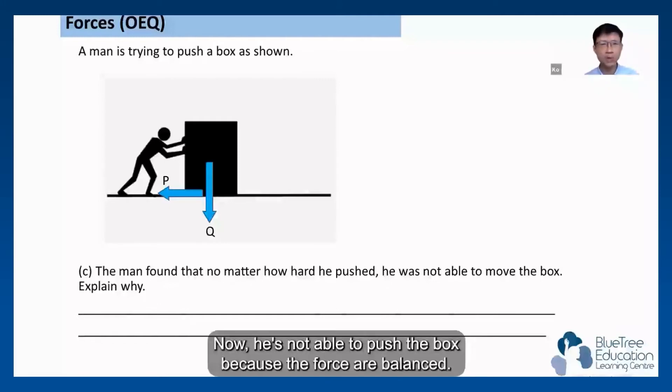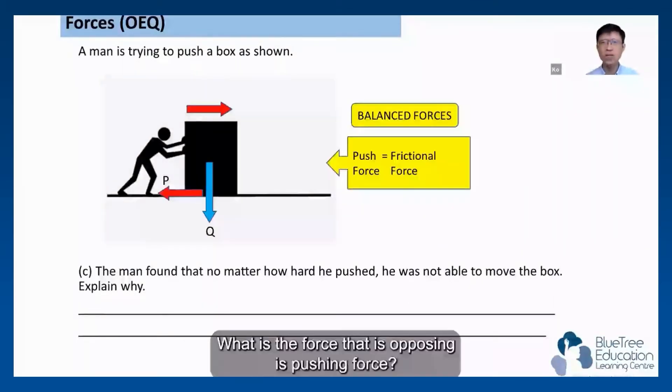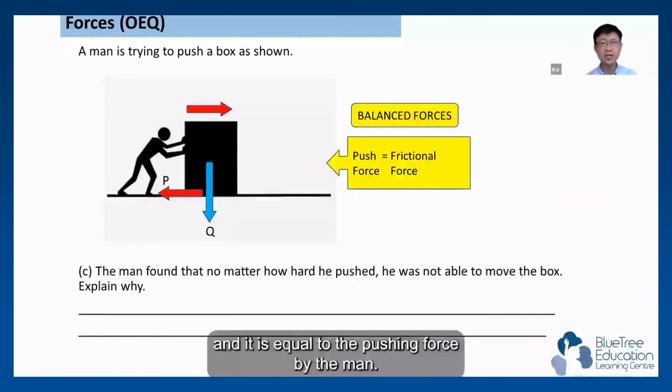Now he's not able to push the box because the forces are balanced. Let's take a look at the forces that's acting on the box. What is the force that's opposing his pushing force? You're right, it is the frictional force. The frictional force P is moving in the opposite direction and it is equal to the pushing force by the man.